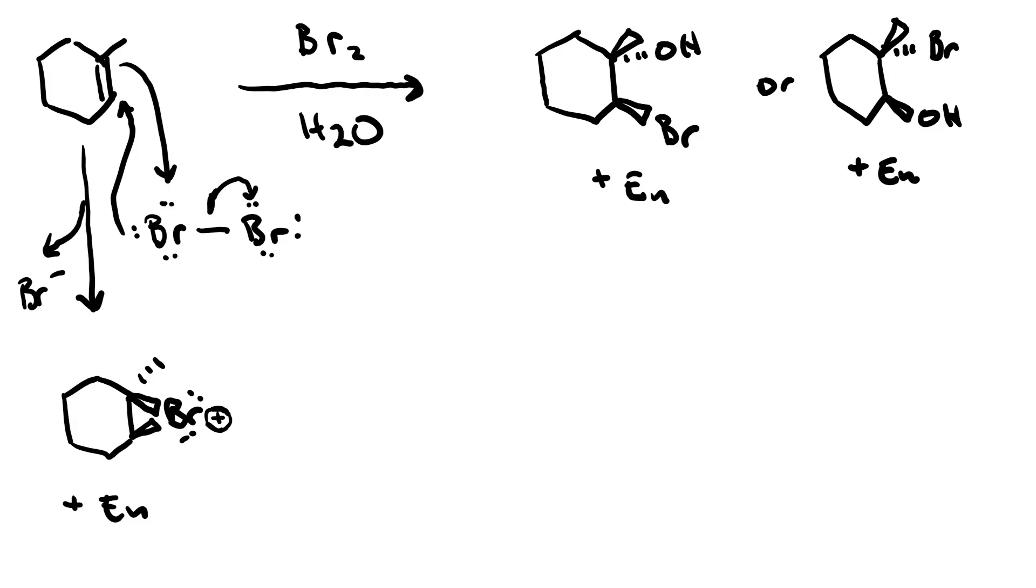But here is where it gets different. Since water is our solvent, the concentration of water is much, much greater than the concentration of bromide. In other words, the halohydrin is much more likely to react with a water molecule than a bromide ion. Furthermore, where is the water going to attack? Well, it's going to attack at the ring position that has more positive charge character. And that is the more substituted ring position.